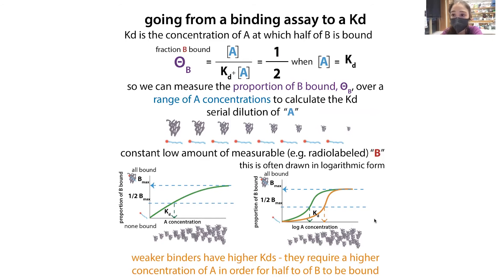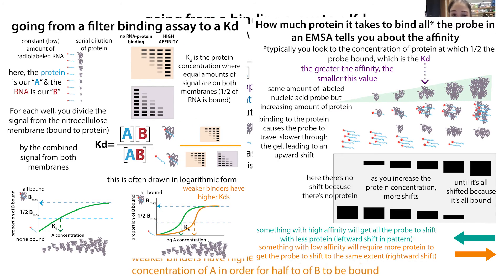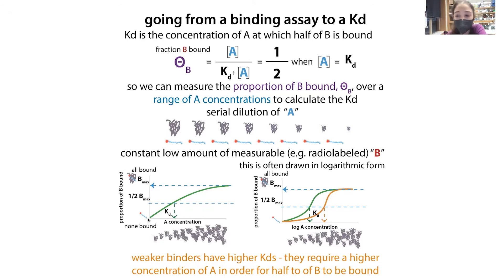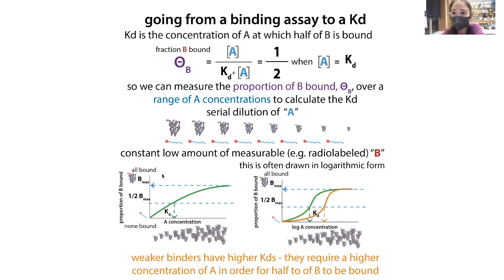There are different types of experiments you can do — slot blots, EMSA for protein-RNA binding, and various other techniques. In this example, we have a protein and a labeled RNA. You increase the concentration of A and measure how much of B is bound. You know the concentration of A you're putting in. Since you have so little of B, you don't need to worry about its absolute concentration — you just need to detect what fraction of B is bound versus unbound, using separation methods like filter binding or gel shift in EMSA.